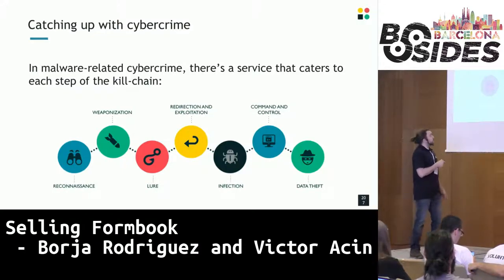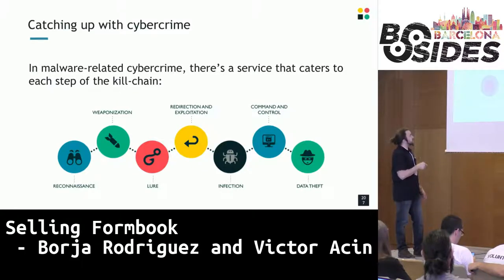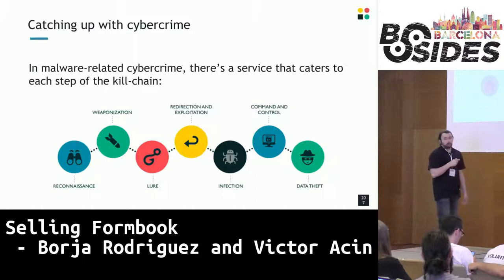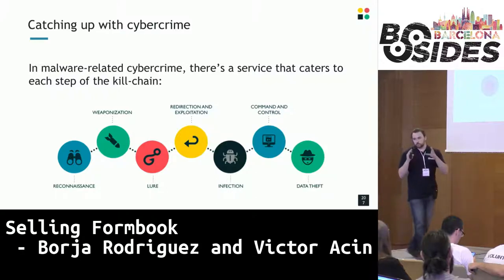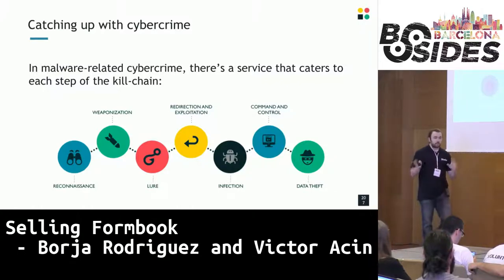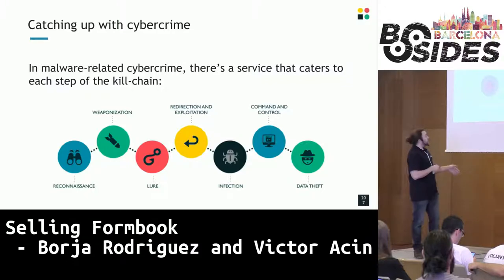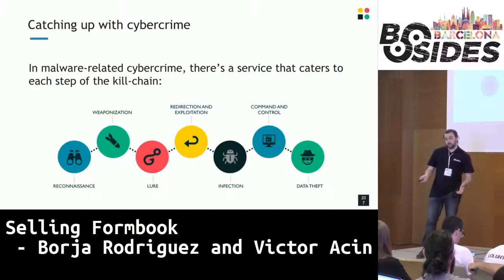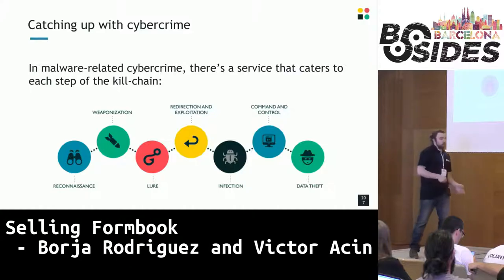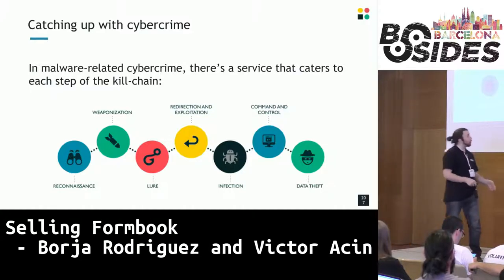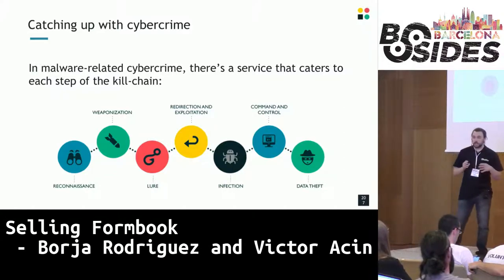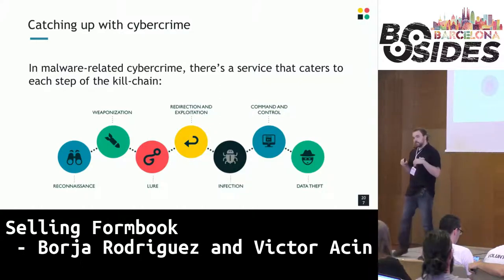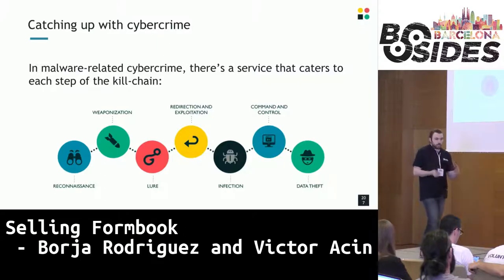The lure, the next step — these three steps can almost always go together. In an email campaign, you would have an email with an attachment, and that email has content sent to someone in particular. The email might be the lure — like, 'have you seen these photos I'm sending you?' The weaponization might be the exploit inside those photos, and the exploitation would be when you get the user to open that file. Once the user opens that file, the infection phase begins.